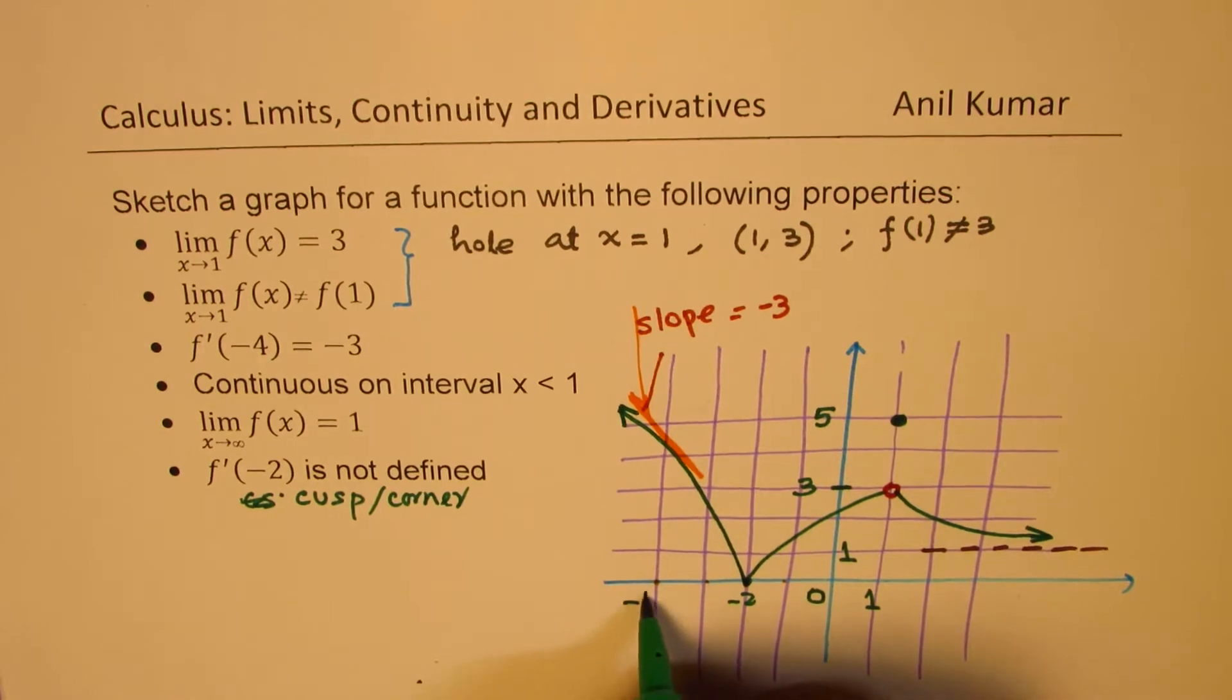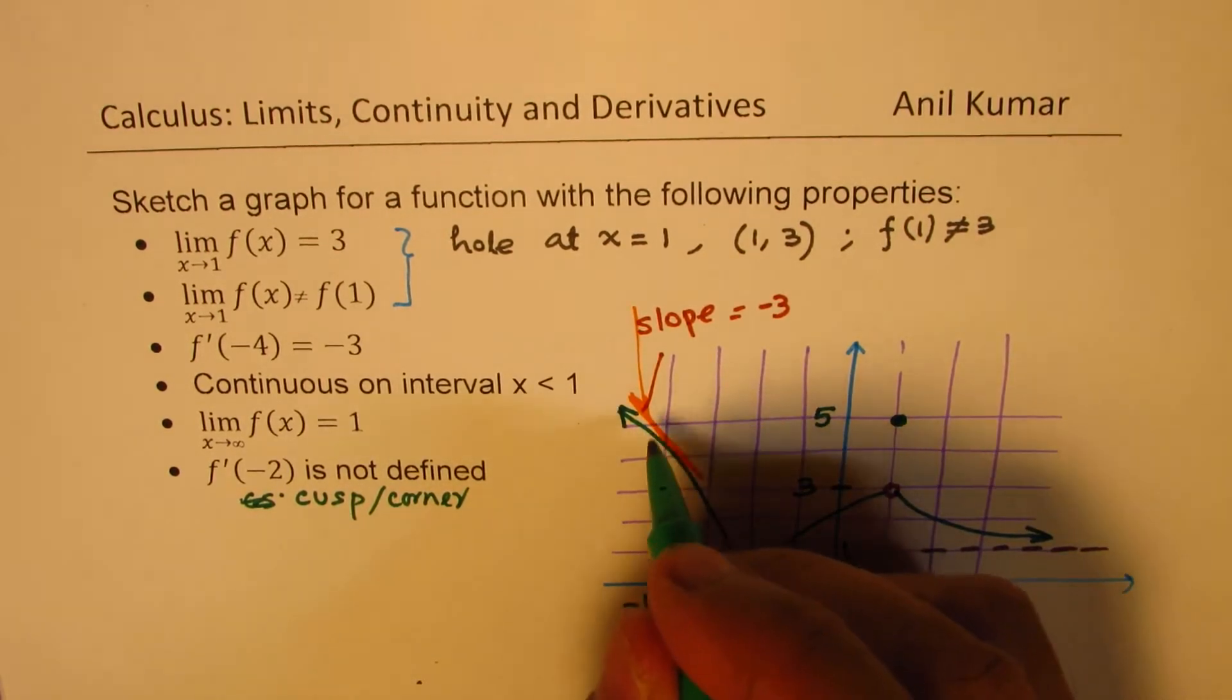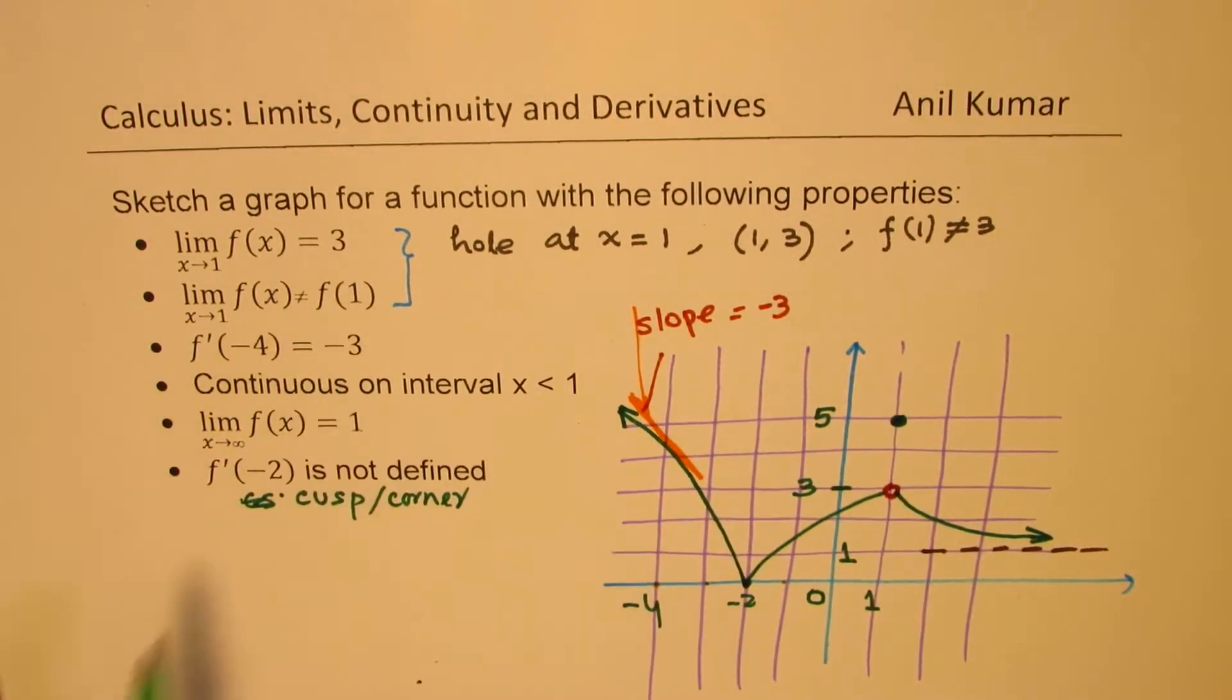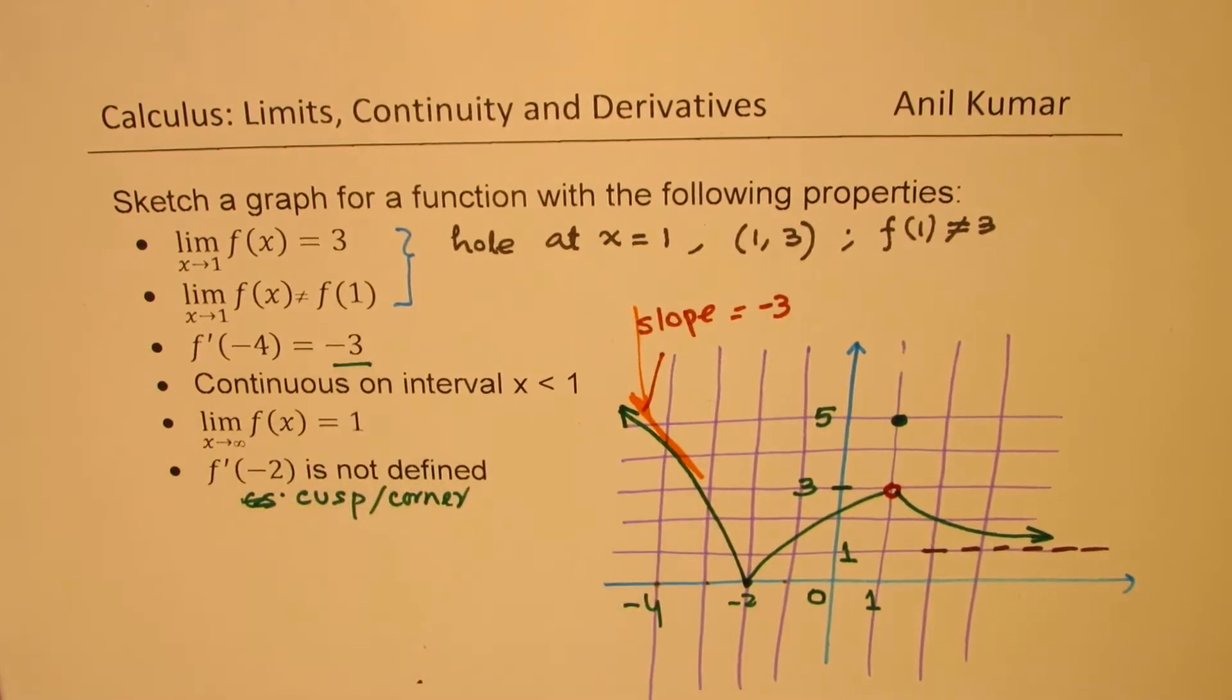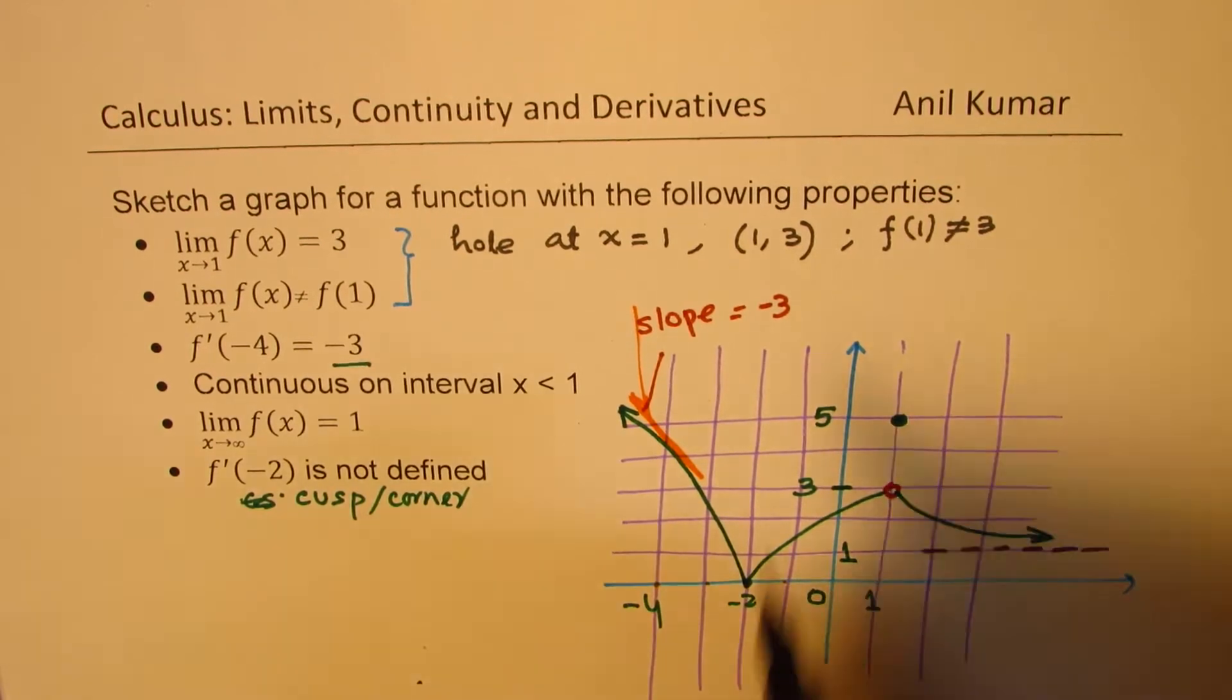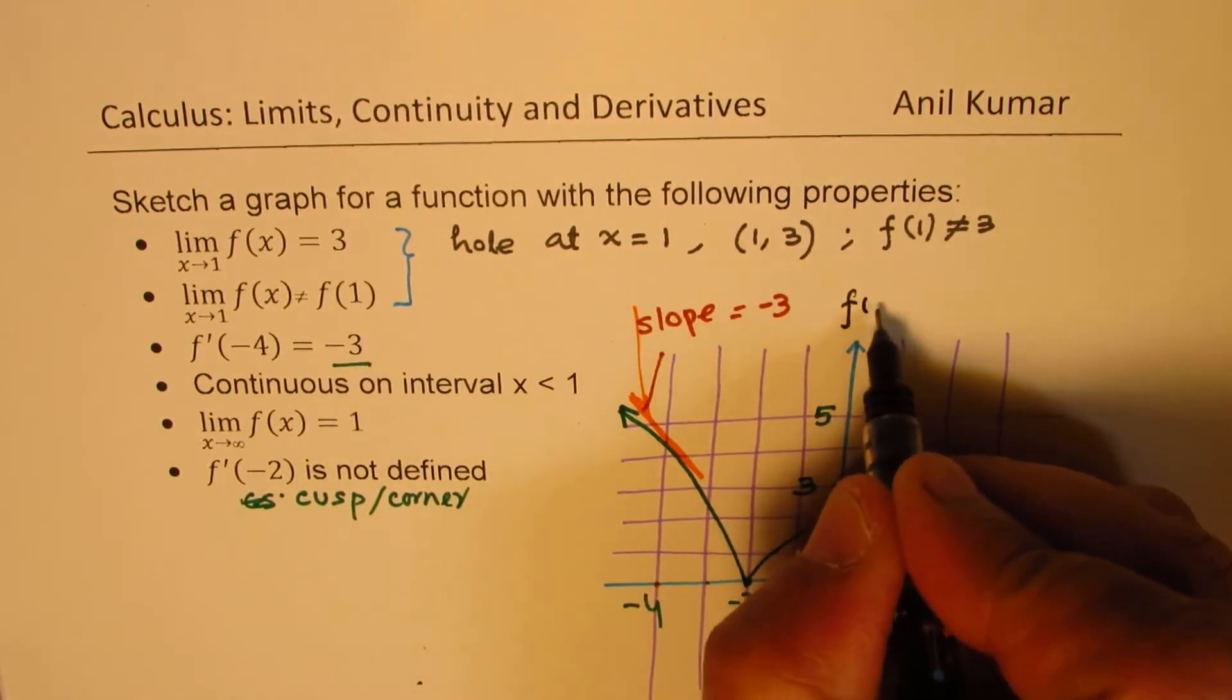And the derivative at minus 4, it should be steeper, will give you a slope of minus 3. It does make sense to you. So that is how we are going to sketch the function. So that becomes our function.